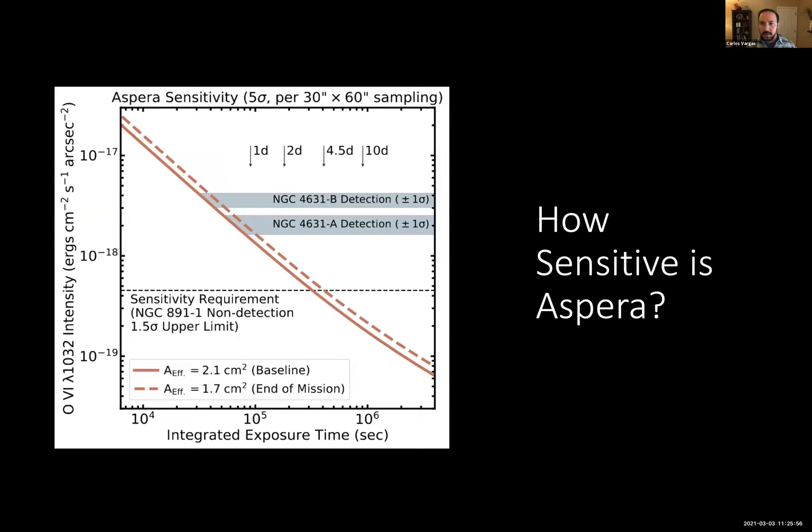So you might be asking, well how sensitive can we actually get? We're going to actually try and map all this stuff out to greater than 30 kiloparsecs or greater than 30 arc minutes from these galaxies. So we need to get pretty darn sensitive to actually get to do that. So on the left hand side here I'm showing our sensitivity calculation with intensity on the y-axis, so smaller numbers here means deeper, and integration time on the x-axis. So in order to get to those two detections that I alluded to earlier in NGC 4631 from that Ott et al study, it'll take us about less than a day. So that's great.